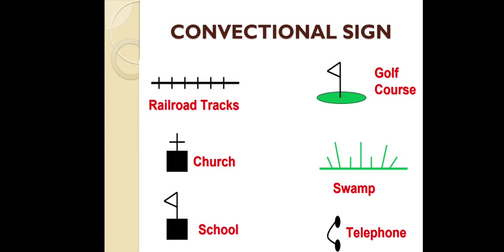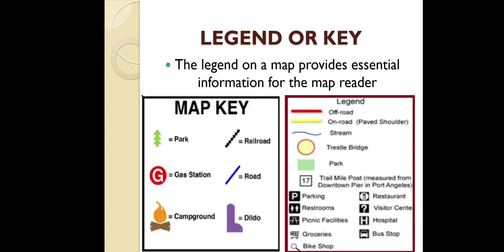The next important element is conventional signs — these are the symbols used to represent objects. The last element is the legend or key, which explains the meaning of the symbols used in a map and provides essential information for the map reader.